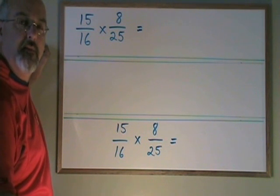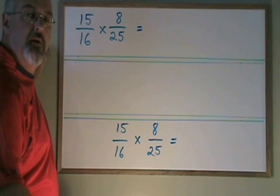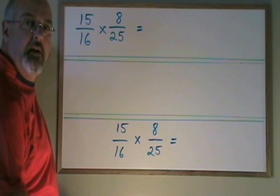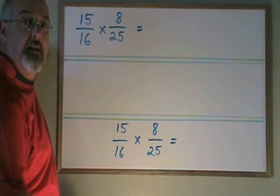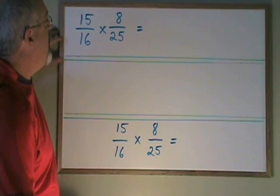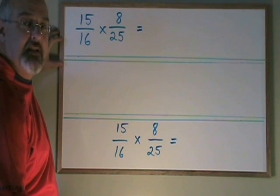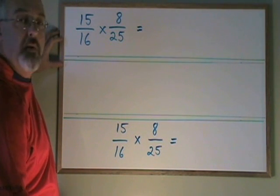This video is about cancelling. Cancelling is something we do when we're multiplying fractions that can make it easier to get to the answer. Here we have a question, 15 16ths times 8 25ths.